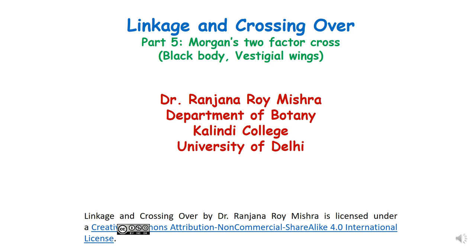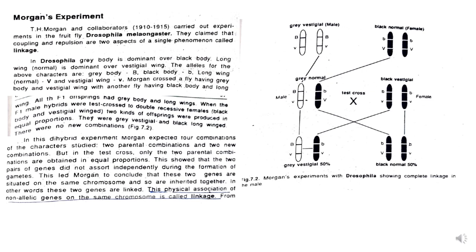Hello dear students. In this lecture we will discuss Morgan's two-factor cross. Morgan's experiment was carried out in fruit fly Drosophila melanogaster. T.H. Morgan and his collaborators claimed that coupling and repulsion are two aspects of the same phenomenon called linkage.